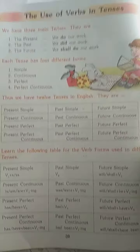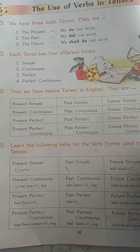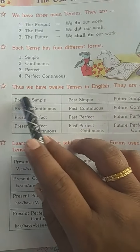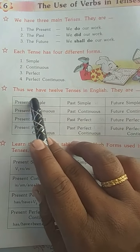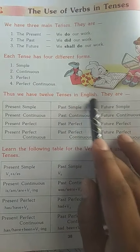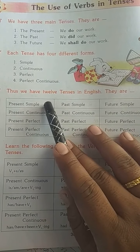Each tense has 4 different forms — har ek tense ke 4 sub-types hai. The first is simple tense, the second is continuous, the third is perfect, and the fourth is perfect continuous.